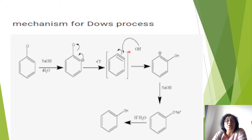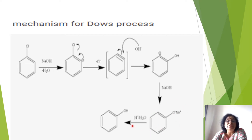When OH attaches on the second carbon, the negative charge remains on the first carbon. The O–H bond breaks; the H⁺ (proton) goes and attaches to the first carbon carrying the negative charge. So on the ortho position you have O⁻, and Na⁺ in solution reacts with O⁻ to form sodium phenoxide. Sodium phenoxide on hydrolysis with dilute HCl forms phenol.